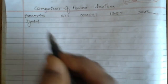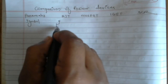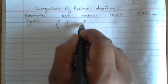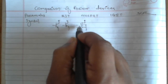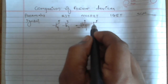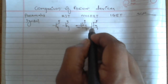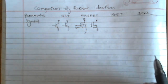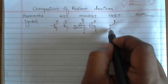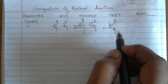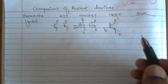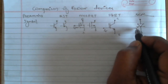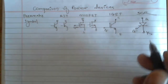We will compare BJT, MOSFET, IGBT, and SCR by parameters. The symbol of BJT is a simple transistor symbol. MOSFET has two types — n-channel and p-channel — with gate, source, and drain terminals. IGBT is the same as BJT but the gate is insulated, having collector, emitter, and gate terminals. The symbol of SCR is the same as a diode but with an added gate terminal.